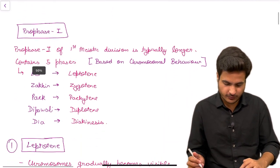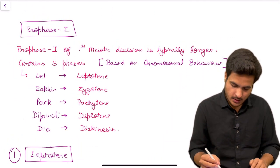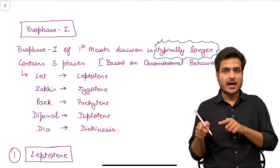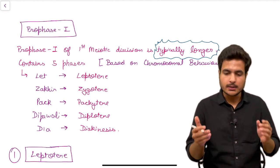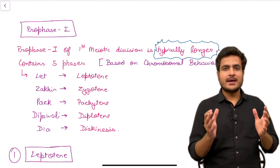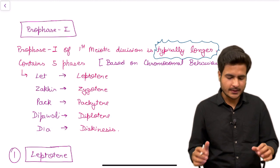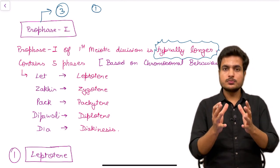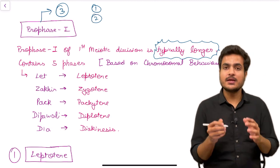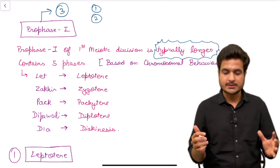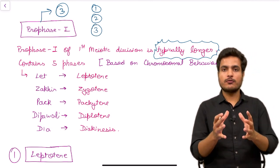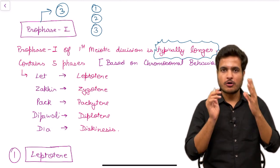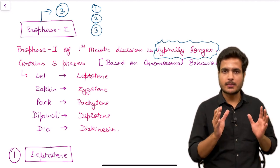Let's start with the first phase of meiosis 1: prophase 1. Prophase 1 is typically longer because DNA modification — recombination — occurs in this phase. From mitosis we know that prophase involves three events: condensation of chromosomes, disappearance of organelles, and disintegration of the nuclear envelope.